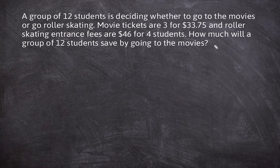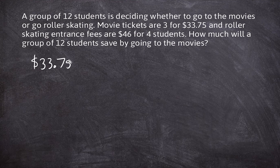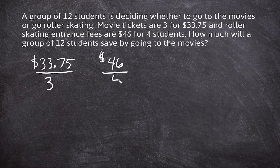In the question, they are inferring that it is going to be cheaper to go to the movies because they are asking how much will they save by going to the movies, and that is what we have to find out. The given rate for the cost of movie tickets is $33.75 for three tickets, and for roller skating the given rate is $46 for four students. We have to figure out the cost for 12 students.